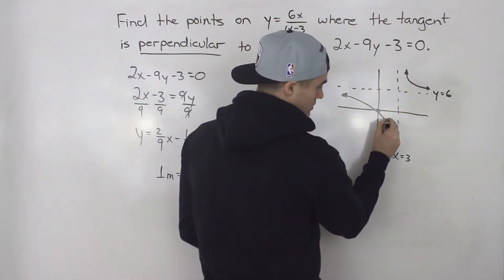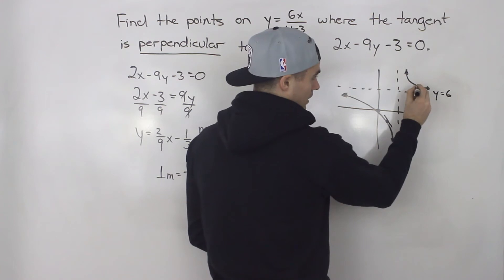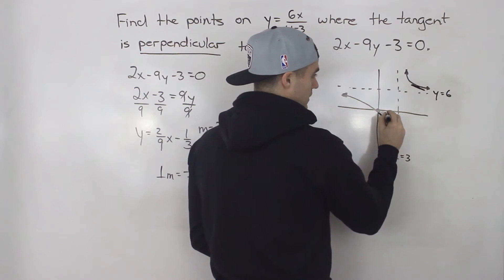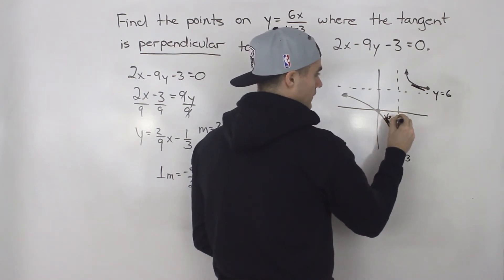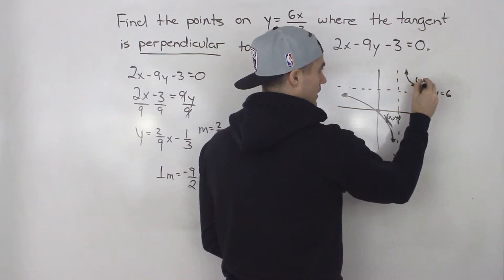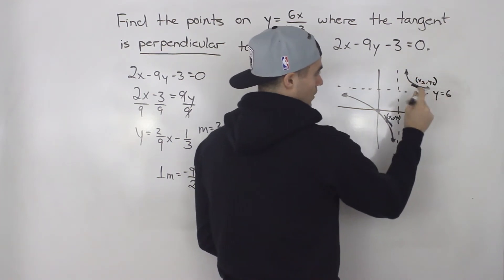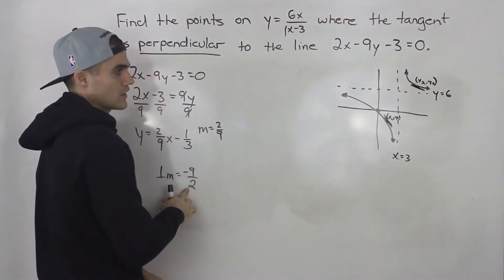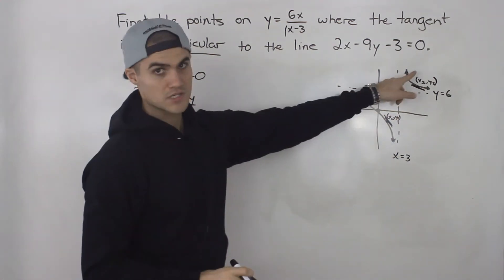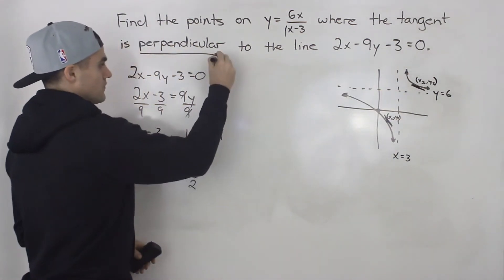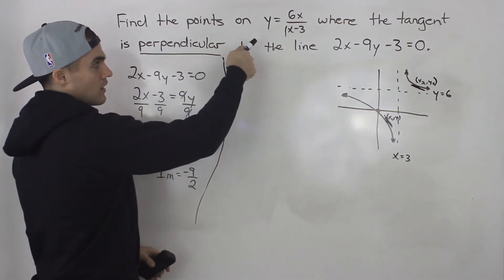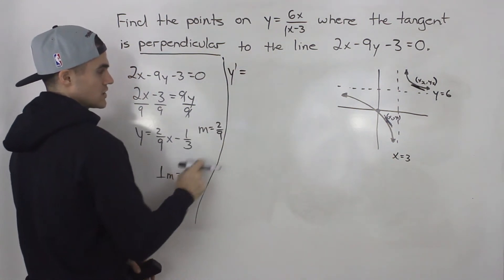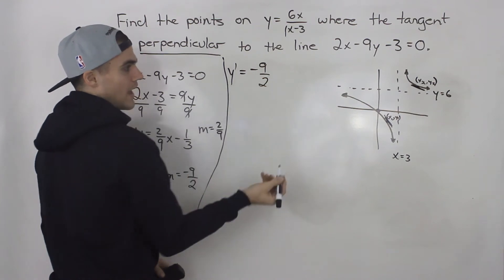There are likely two points on the function — let's call them (x1, y1) and (x2, y2) — where the tangent slope equals negative 9 over 2. To find those exact points, we find the derivative of the function and determine at which x-values the derivative equals negative 9 over 2.